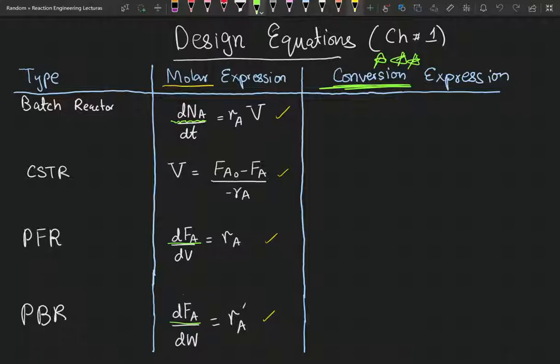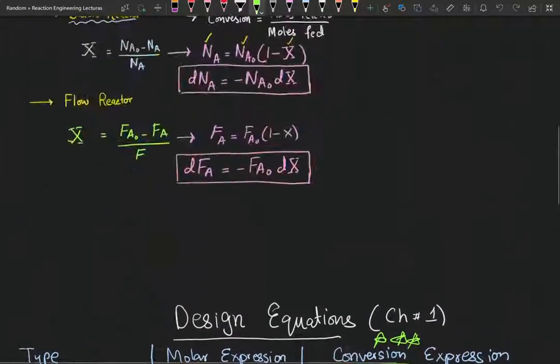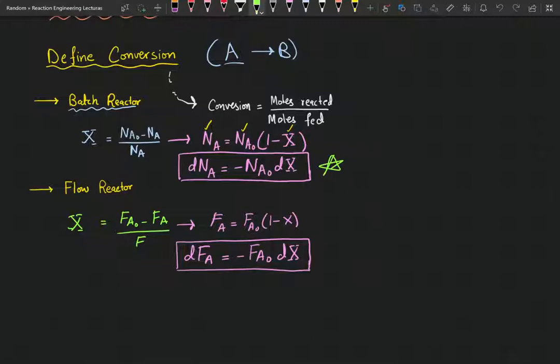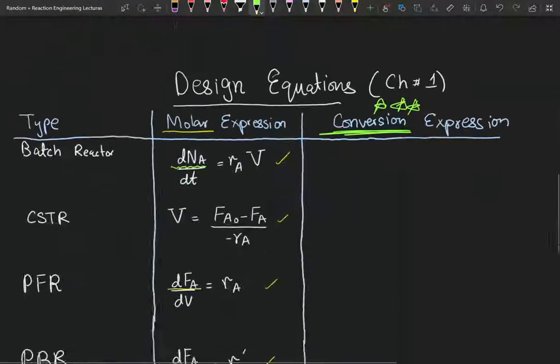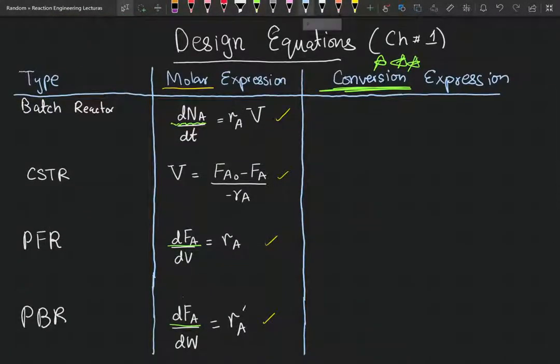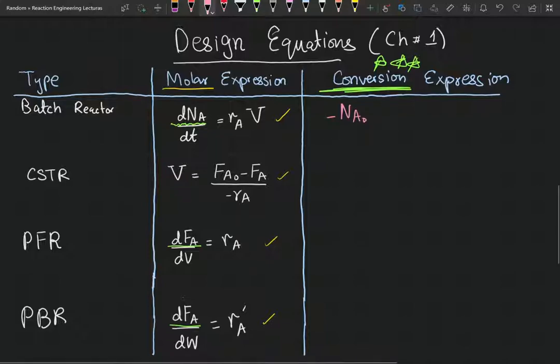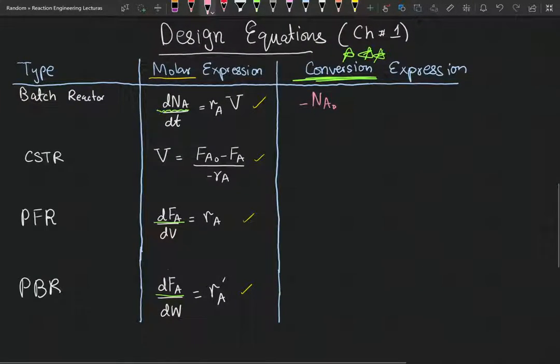So the first one, I hope you guys can see, this is just a simple substitution of these two. After doing a simple substitution, you get negative N_A initial dx dt is equal to r_A V. That's our first one.